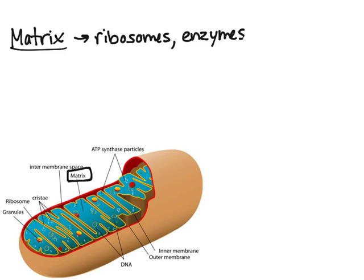Mitochondria have their own DNA. With the discovery of mitochondrial DNA, it was determined through experiments that the mitochondria was one of the first structures in the first cell. This makes sense because cells need energy, so mitochondria are very important in making energy and helping a cell live.